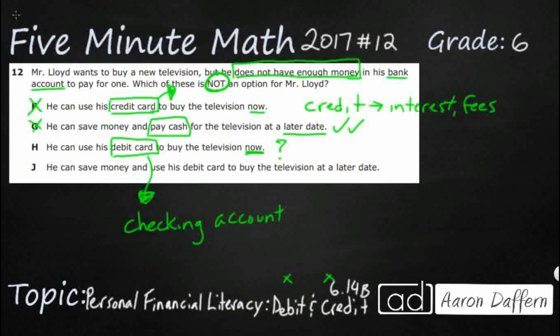He can save money and use his debit card to buy the television at a later date. So yes, save money, use his debit card. That's going to be his payment method, but later date. You notice how this works just like this. Actually, both of these are just as good. Debit card or cash at a later date because it's pulling from real money. So that is not the answer. Our answer is H.